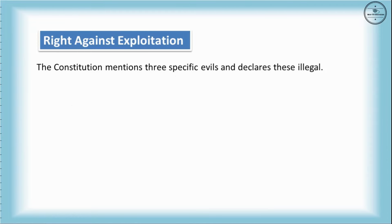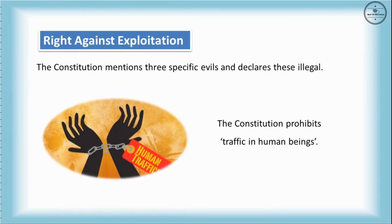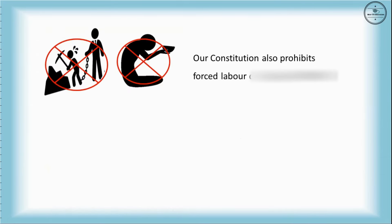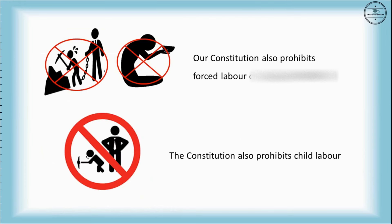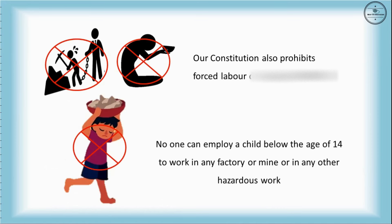The next fundamental right is the Right Against Exploitation. The constitution mentions three specific evils and declares them illegal. First, it prohibits traffic in human beings — meaning the selling and buying of human beings. Second, the constitution also prohibits forced labor or bonded labor in any form. Finally, the constitution prohibits child labor — no one can employ a child below the age of 14 to work in any factory or mine or in any other hazardous work.